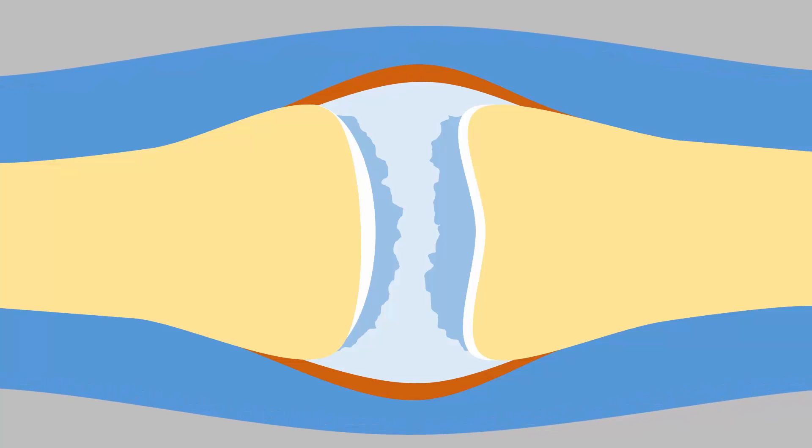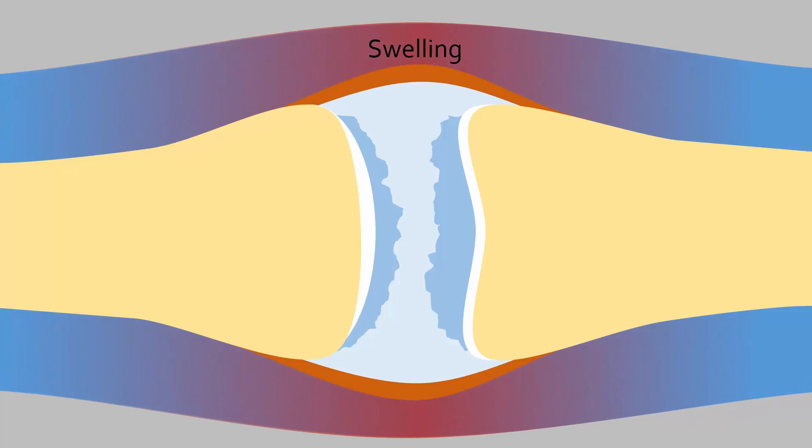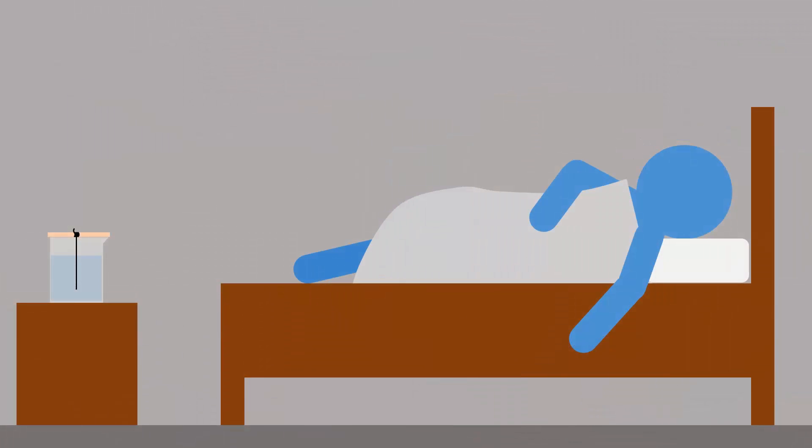Whenever there is inflammation, there is redness, swelling, and pain. Acute gout attacks can last for up to a week, but eventually subside. Oftentimes, the attacks happen at night, as lower temperatures decrease solubility and increase crystallization.